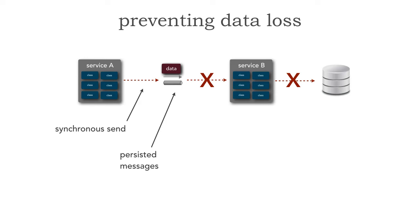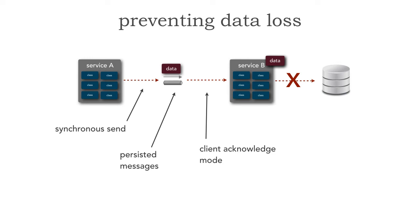The most common aspect of data loss is the second one — when service B retrieves the next message. The way to fix this is to use client acknowledgement mode. The default in all messaging systems is auto acknowledge, which says: give me the next message and remove it from the queue. Client acknowledge says: give me the next message, but keep it on the queue until I tell you I'm done processing. The broker assigns that client ID for service B to that message so no one else gets it — the message is on the queue but in process. With client acknowledge mode, if service B goes down, the data is still in the persisted queue, so there's no way to lose any data.